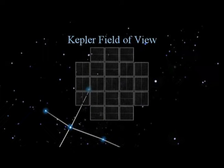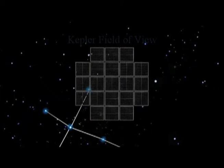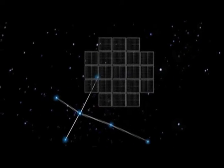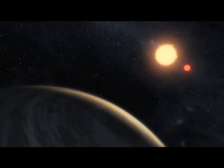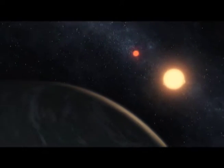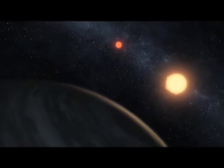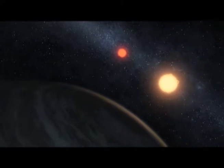Who says life doesn't imitate art? In September, NASA's Kepler Space Telescope made an amazing discovery in our galaxy in the star constellation Cygnus, about 200 light years away from Earth. The Kepler Space Telescope detected what's called a circumbinary planet. Unlike our planet, which orbits the sun, a circumbinary planet orbits two suns.